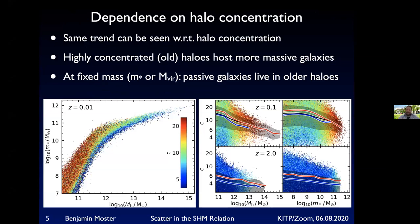Looking at other halo properties — for example, halo concentration, which correlates well with halo formation time — you can see the same trend. I've plotted the stellar-to-halo mass relation for our model color-coded with concentration, and the halos that form early — the high-concentration ones — tend to have more stellar mass in their galaxies. We also find that at fixed mass, both fixed stellar and fixed halo mass, passive galaxies tend to have higher concentrations than active galaxies, meaning they tend to live in older halos. This confirms similar findings from satellite kinematics by Wojtek and Maman, and Edith Zahabi with HOD or semi-analytic techniques.